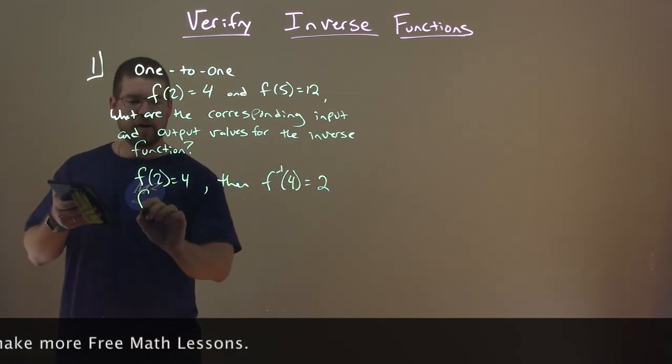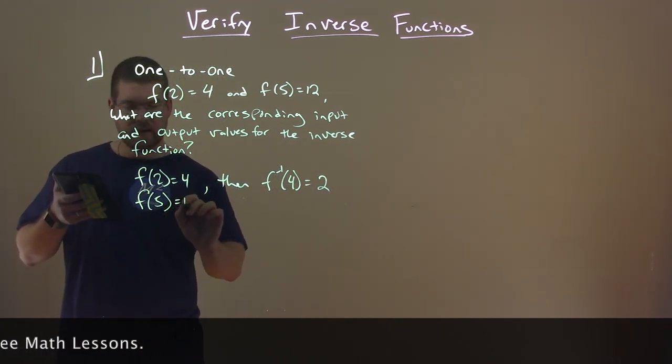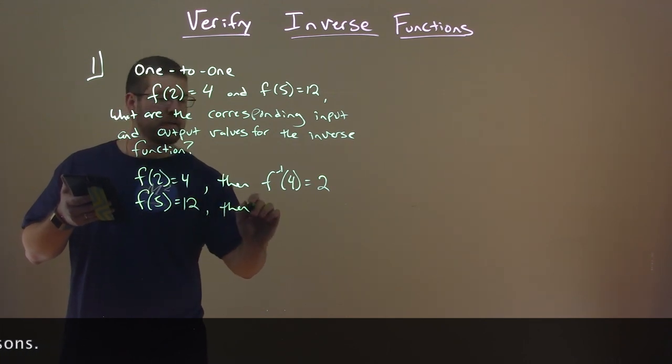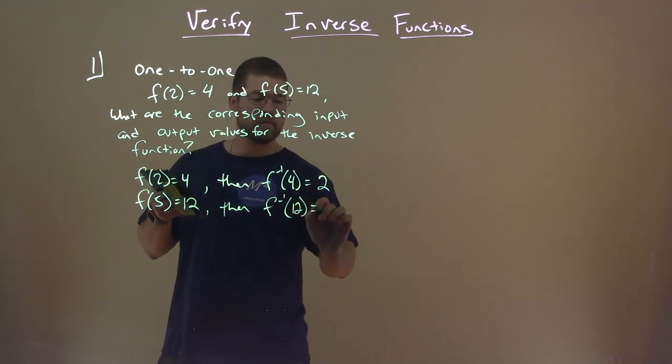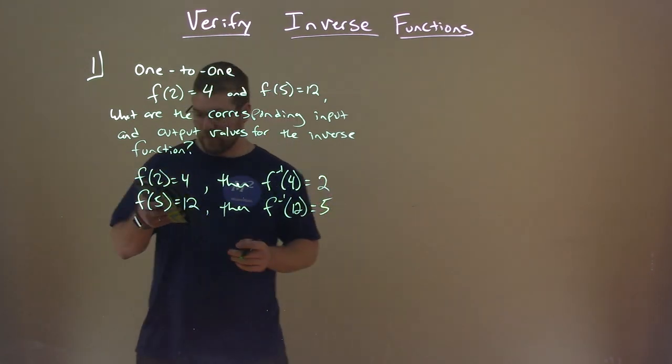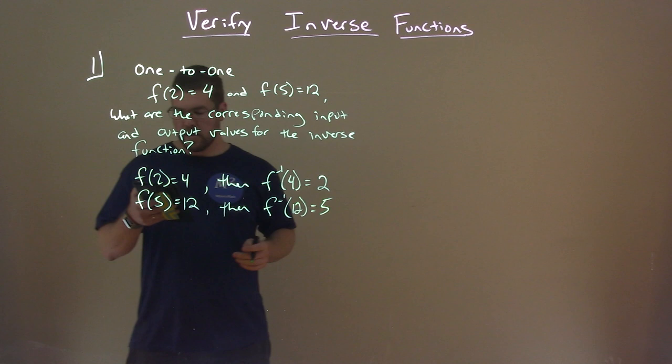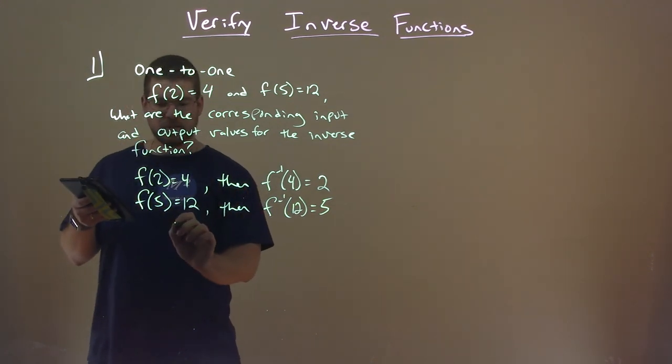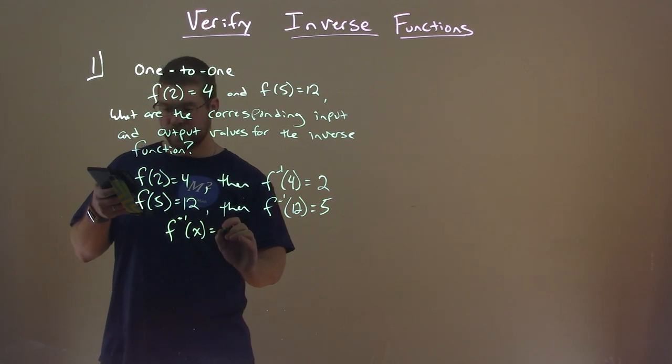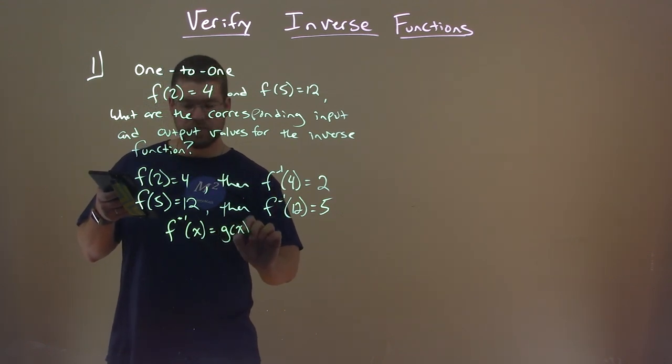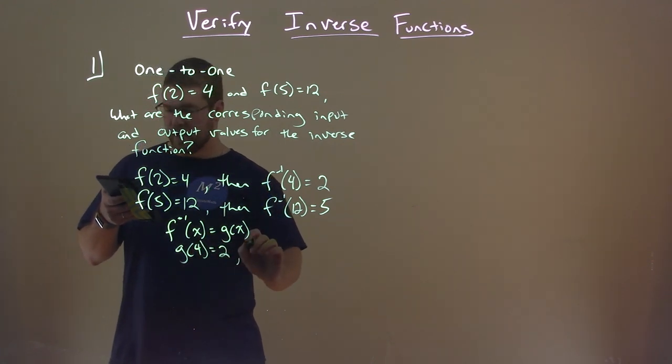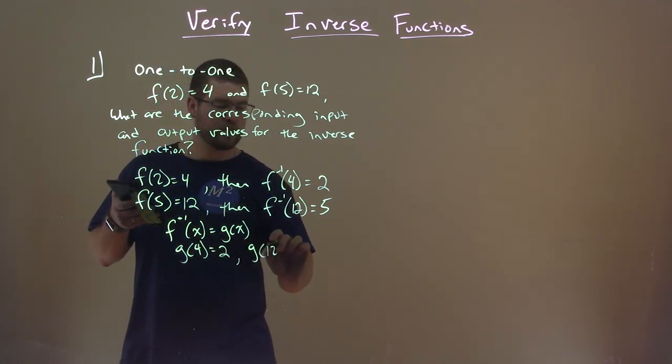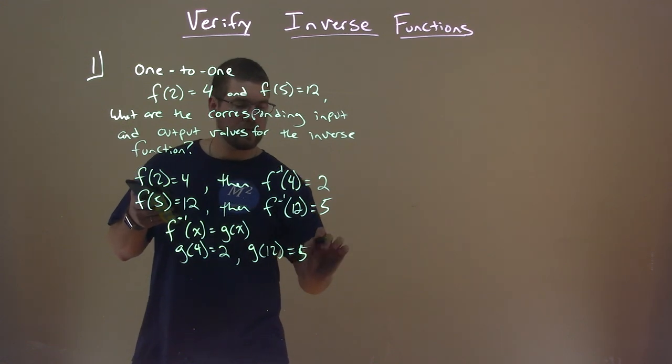Same thing here. f of 5 is 12, so f inverse of 12 is equal to 5. So if we want to name our inverse function, let's label it with g. g of x. Then we can say g of 4 equals 2 and g of 12 equals 5.